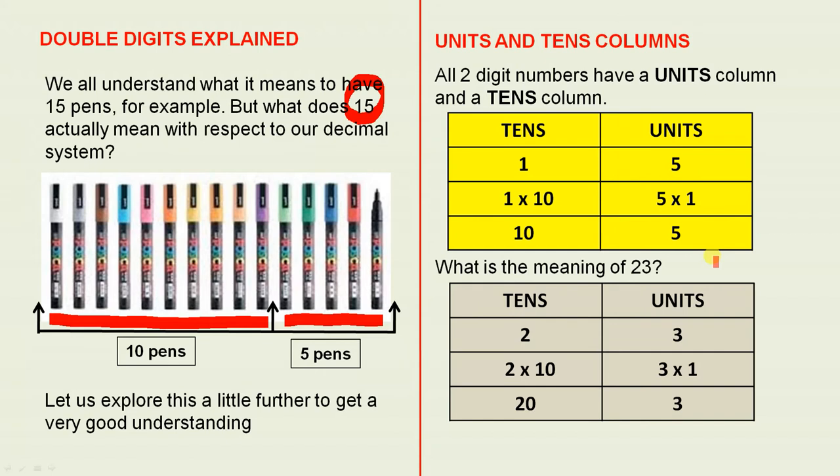What is the meaning of 23? Okay, this 3 is in the units column, so it means 3 1s, and it has a value of 3. This 2 in 23 is in the tens column. The meaning is 2 tens, so the value is 20. So 20 plus 3 is 23, and that's the number we started with.